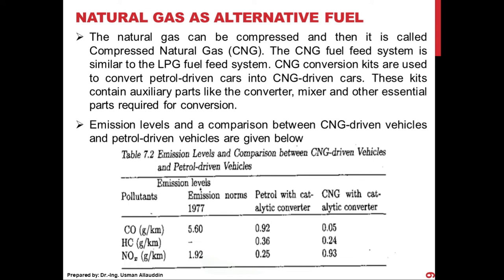A table compares emission levels between CNG-driven and petrol-driven vehicles. Carbon monoxide emission from petrol engines is 0.92 g/km, whereas with CNG it drops considerably to 0.05 g/km. Hydrocarbon emissions are 0.36 g/km for petrol and 0.24 g/km for CNG. However, NOx emissions are higher with CNG because its higher octane number means the engine operates at higher temperatures, and NOx emissions are dependent on flame temperature.